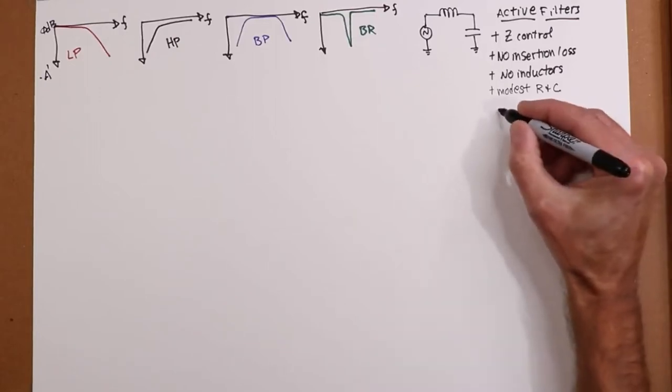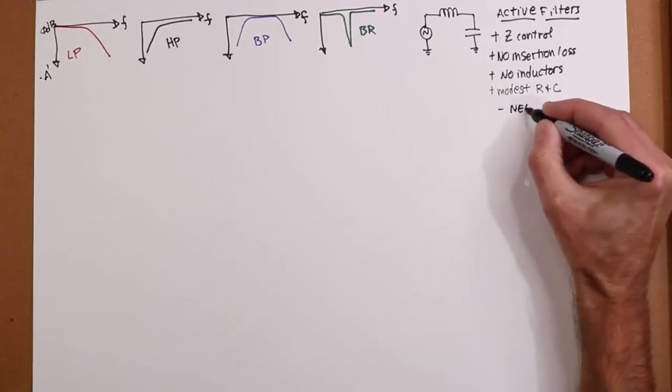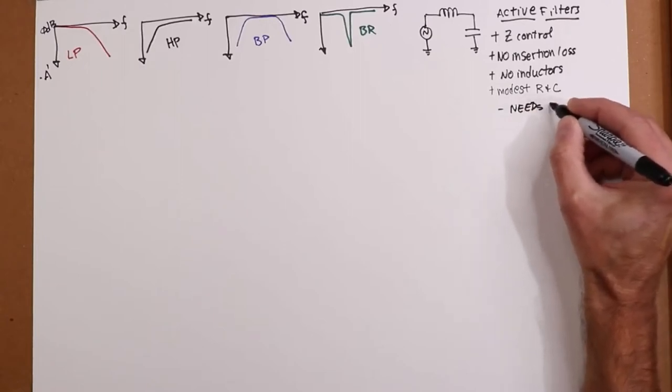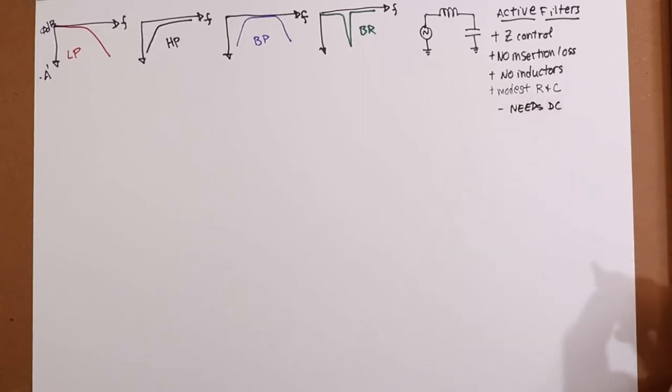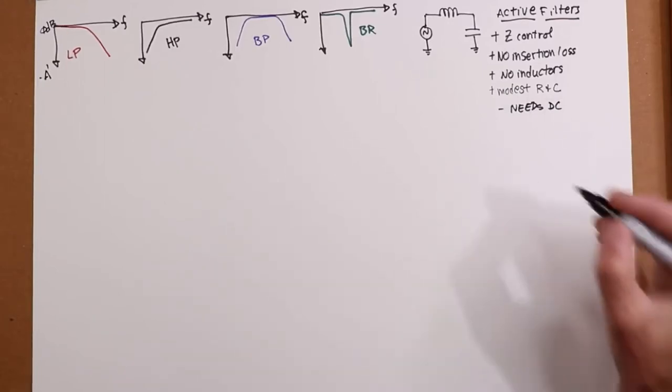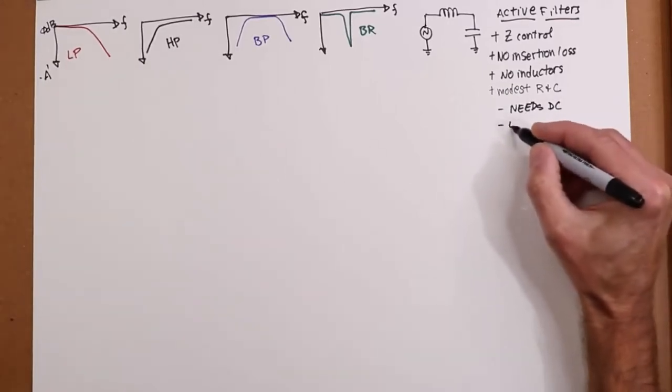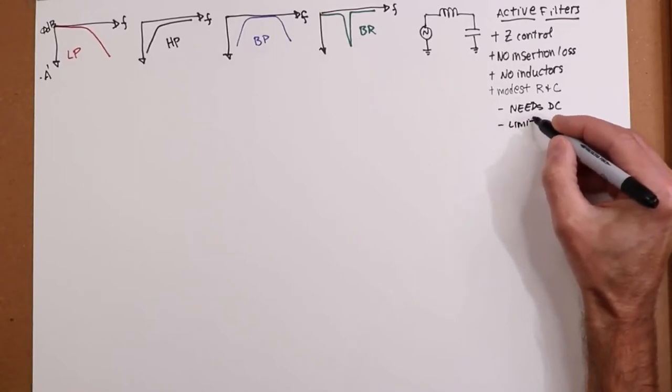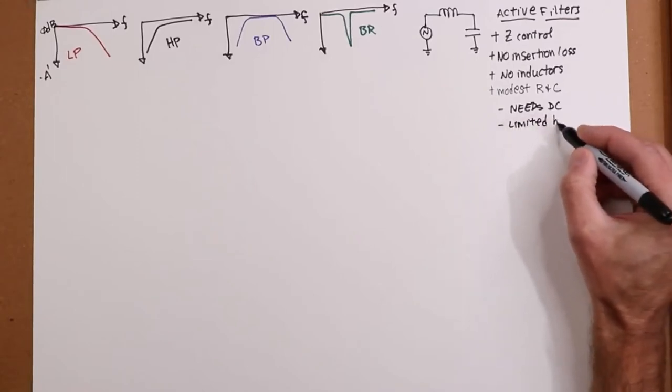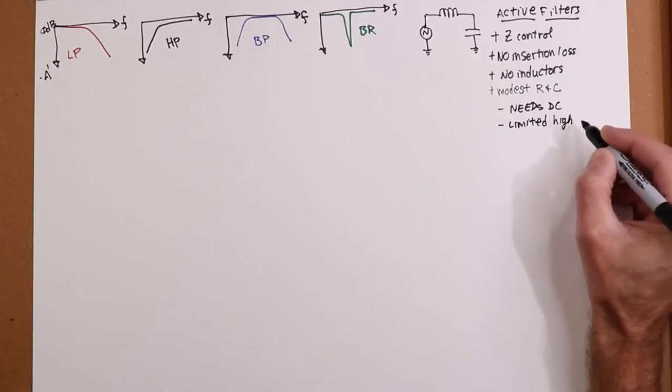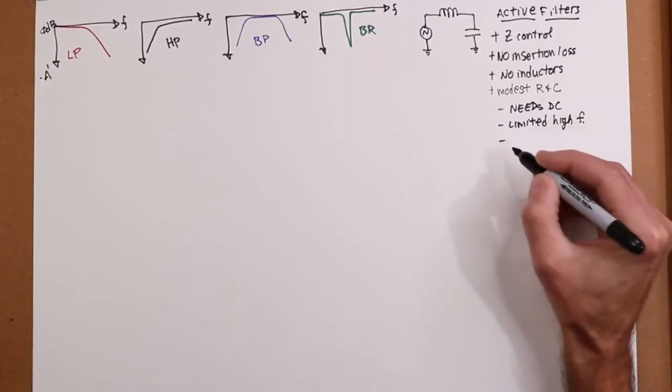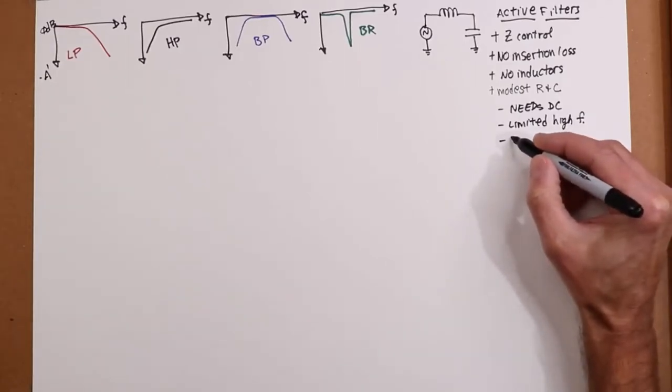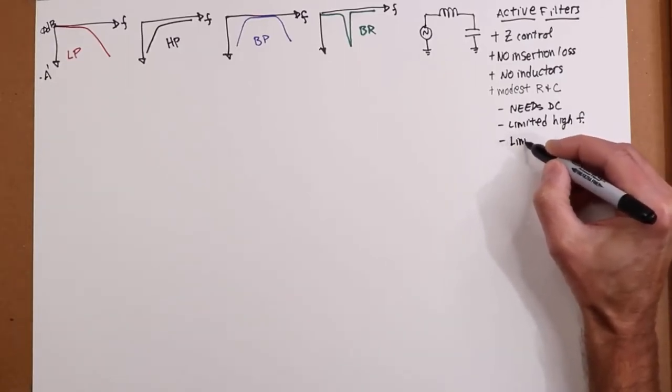On the downside, well, this does need DC. You have to have power. But in most systems, you have power for other things. So you can just kind of piggyback on that. You have limited high frequency capability because that's limited by the op amp. So you're not going to be making microwave filters with this. Another one is limited power capacity. That's limited by the output of the op amp.